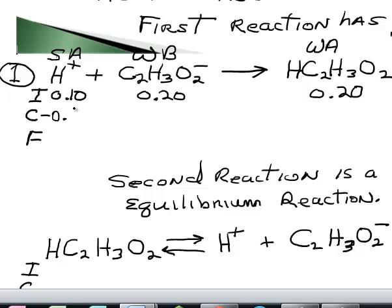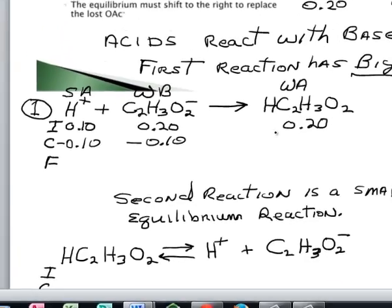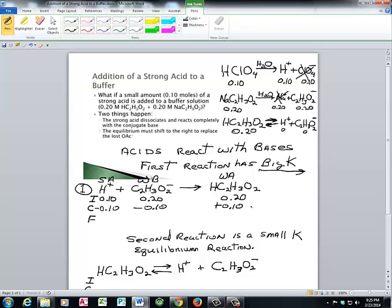We have 0.0, minus 0.10 molar, minus 0.10 molar. And then we're going to make 0.10 molar of our acetic acid. We add our initial and our change line up. And what we get is 0 of our strong acid left, 0.10 molar of our acetate ion left, and 0.30 molar of our acetic acid left. So in this first reaction, it's a big K reaction. Our table is not ICE, it's ICF in that first step. That's the step where the buffer absorbs the strong acid or alternatively absorbs the strong base.